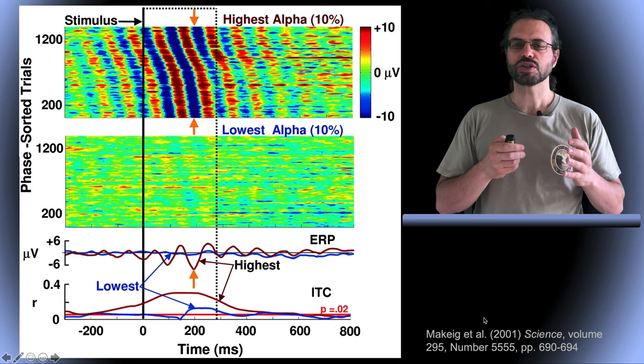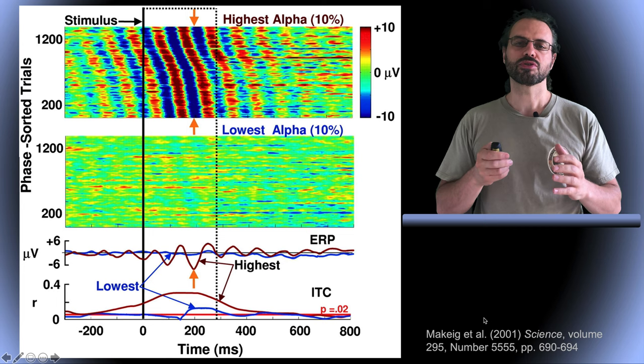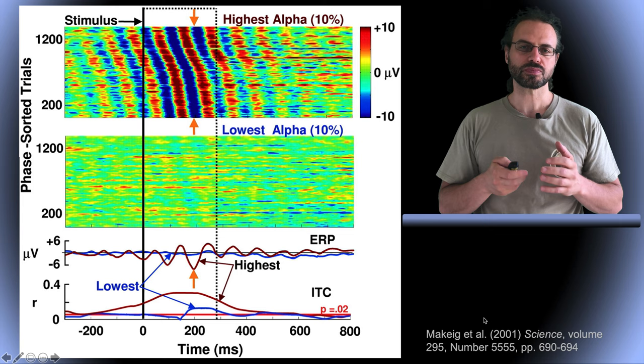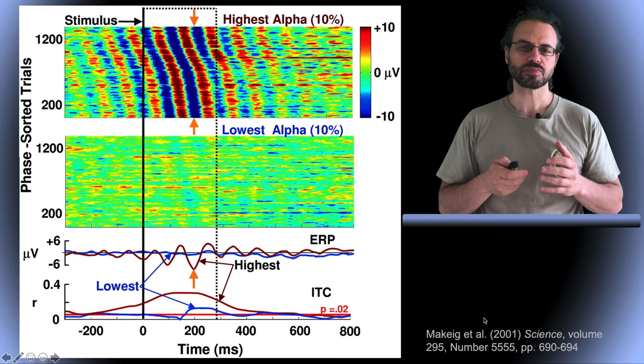In general, when looking at ITC, the value will be relatively large for early ERP peaks, such as 0.8 for P1, and then decrease as time progresses with typical value for P300 between 0.3 and 0.4. Now to conclude on the ITC,